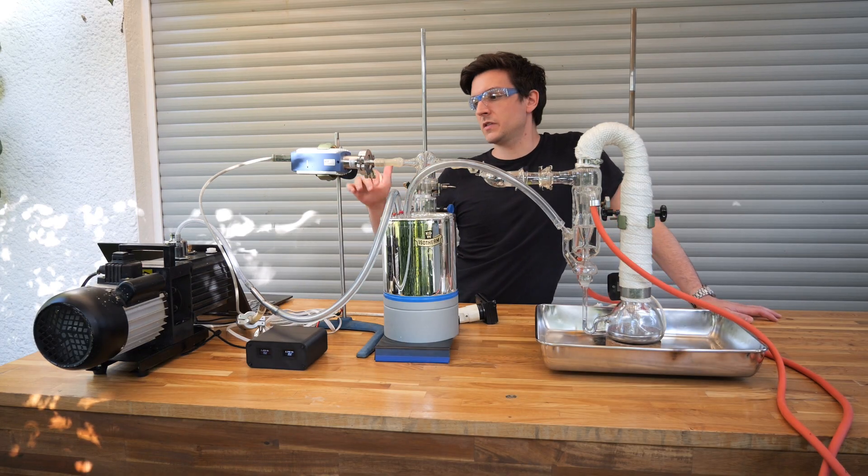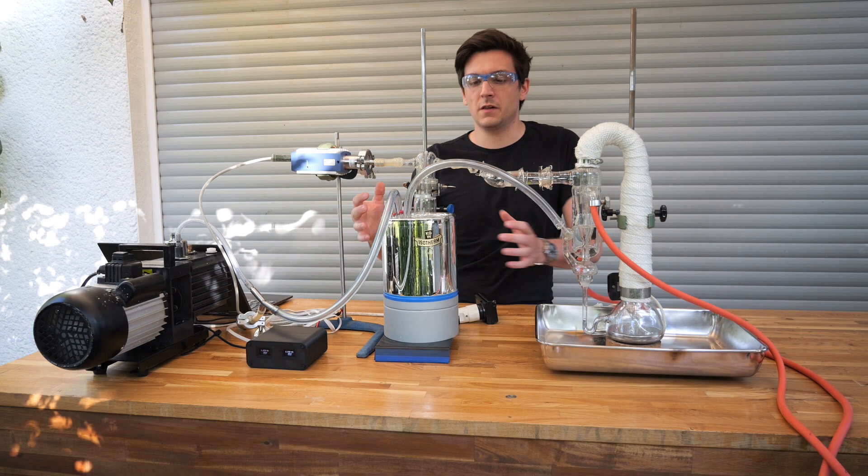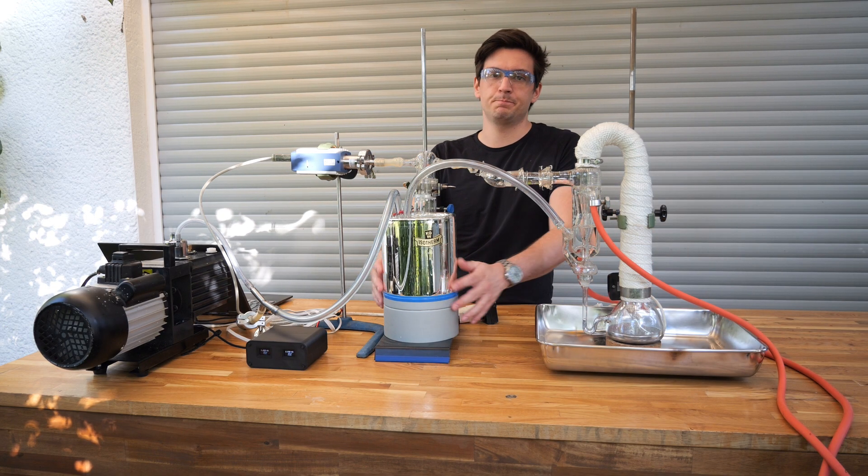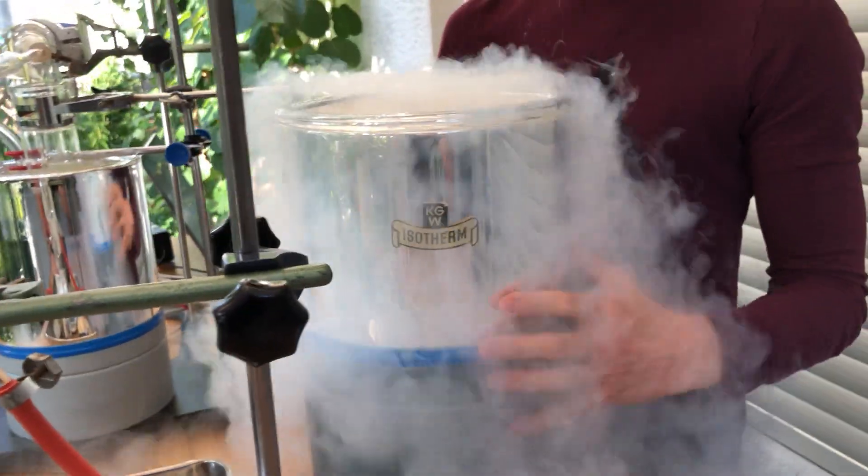So the system is almost pumped down through the roughing vacuum which means we can fill this dewar with liquid nitrogen. To fill this dewar with liquid nitrogen we are going to use its bigger brother.